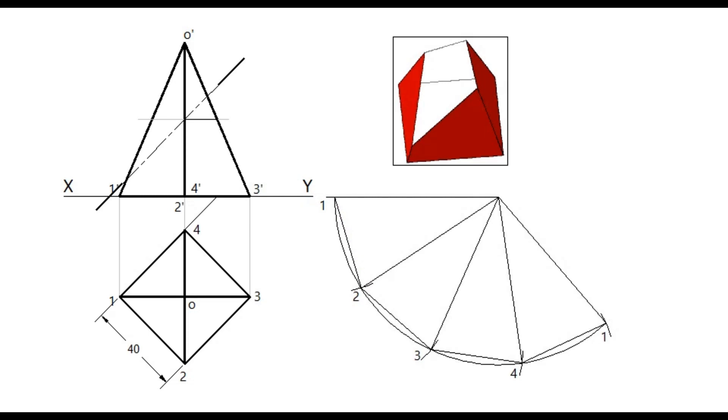Measure the distances of points on the slant edge. Mark them on the corresponding lines of development. Join these points with straight lines.